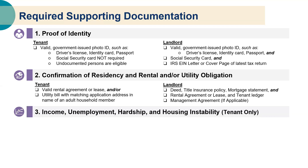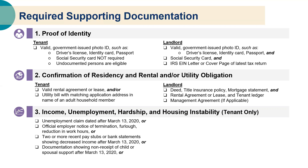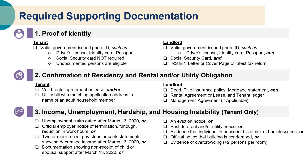Third, tenants must provide documentation of income or unemployment, hardship during the COVID-19 pandemic, and evidence of housing instability. These documents could include an unemployment claim dated after March 13, 2020; official employer notice of termination, furlough, or reduction in hours; two or more recent pay stubs or bank statements showing a decreased income after March 13, 2020; or documentation showing the non-receipt of child or spousal support after March 13, 2020. Also, an eviction notice, past due rent or utility notice, or evidence that an individual in the household is at risk of homelessness — including an official notice that the building is condemned or evidence of overcrowding, meaning greater than two people per room.